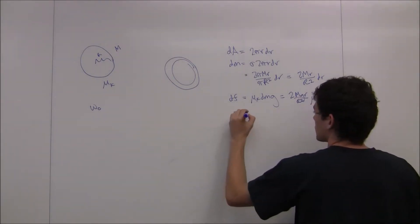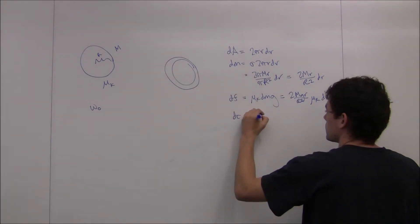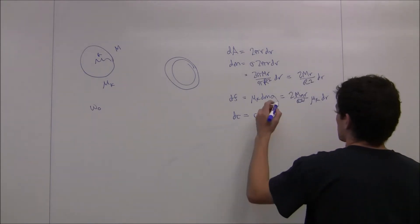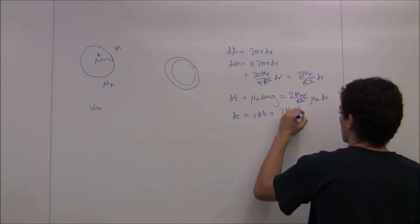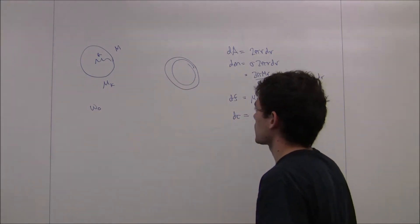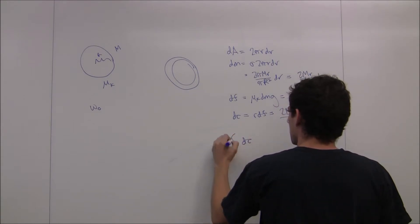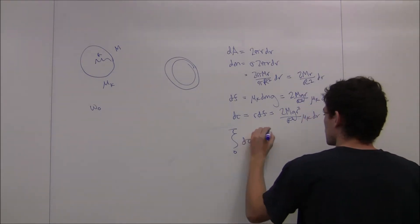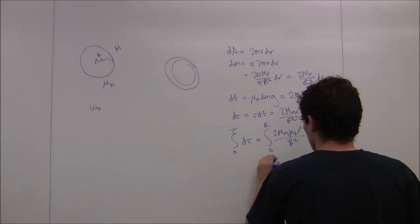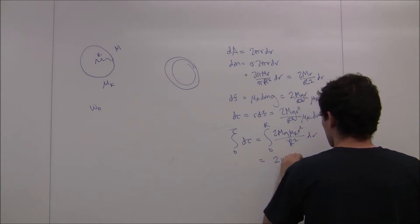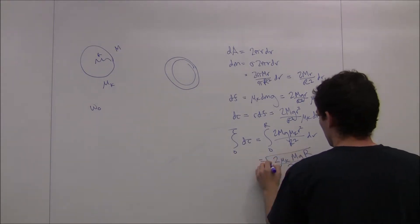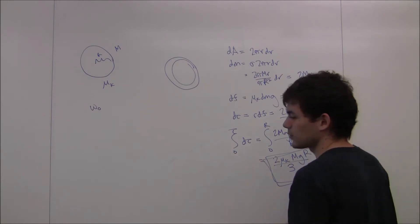This tells us that d tau, the infinitesimal torque, is just dF times r, the radius, since the force of friction will always oppose the direction of motion — so friction is always going to be a tangential force here. That gives us 2mg r squared over R squared times mu sub k dr. Now all we have to do is integrate the torque over the full radius: the integral from 0 to big R of 2mg mu sub k r squared over R squared dr, which gives us the full torque: 2 mu sub k mg R over 3.